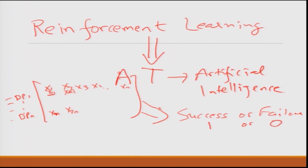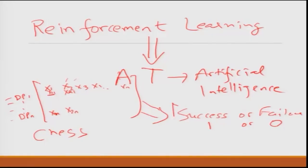Just to give an example, consider the game of chess. Each of these different axes could be different moves that you make and, after all the moves as per the rules of the game, you get a final success or failure — 1 or 0. The goal of a reinforcement learning algorithm is to optimize each of those moves, each of those unit actions that led you to the final outcome. This 1 or 0, success or failure, is called reinforcement.